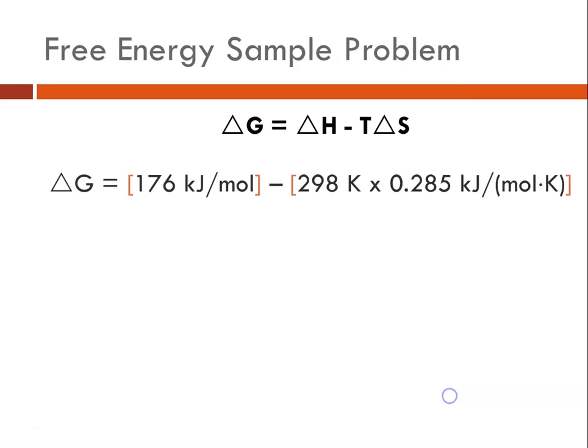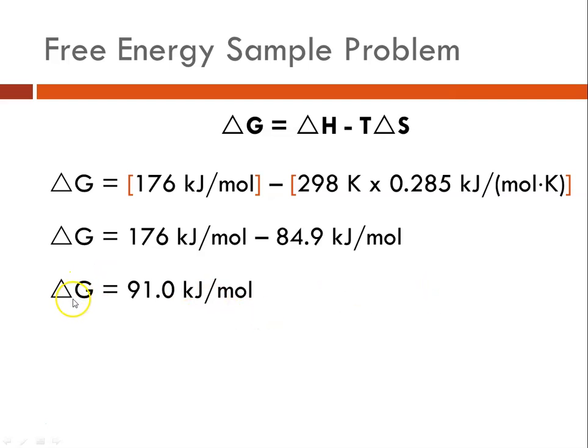So here is our equation, delta G equals delta H minus T delta S. Here's my delta H, here's my T in kelvin, and here is my delta S. So doing the math, we end up with a delta G of 91.0 kilojoules per mole. It is a positive number, therefore this is a non-spontaneous reaction. Delta G is positive.